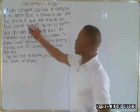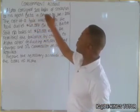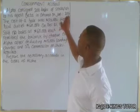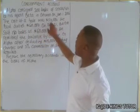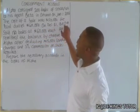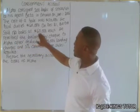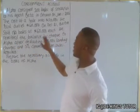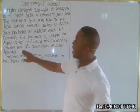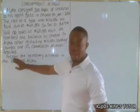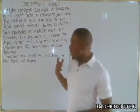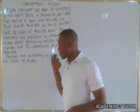If you have not seen that video, I'll drop the link below or up here, so ensure you watch that before this, so you can understand some postings and rules for debiting and crediting. Now I want to solve a question related to a consignment account. The question states: Alpha consigned 200 bales of stockfish to his agent Beta in Ghana on January 1st, 2016. The cost of the bales was 50,000. He paid duties of 60,000.